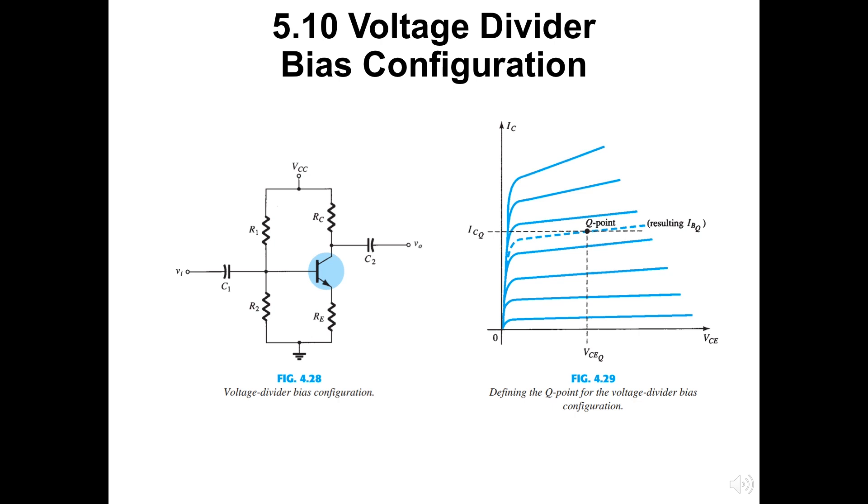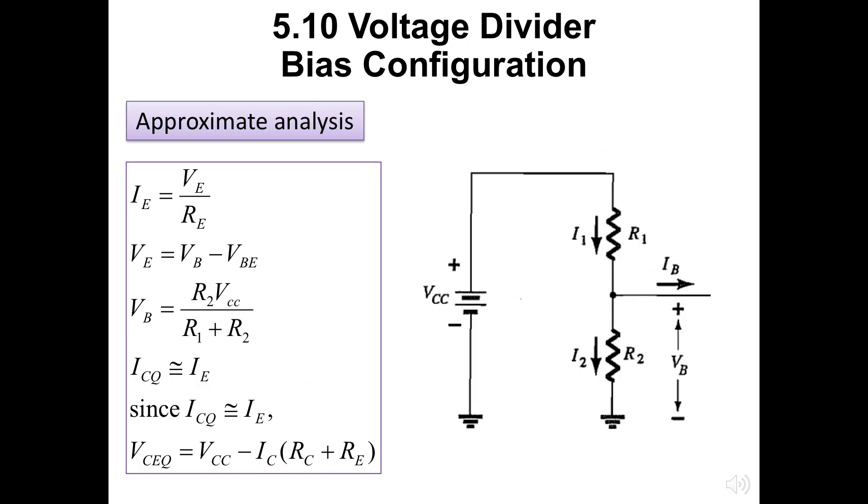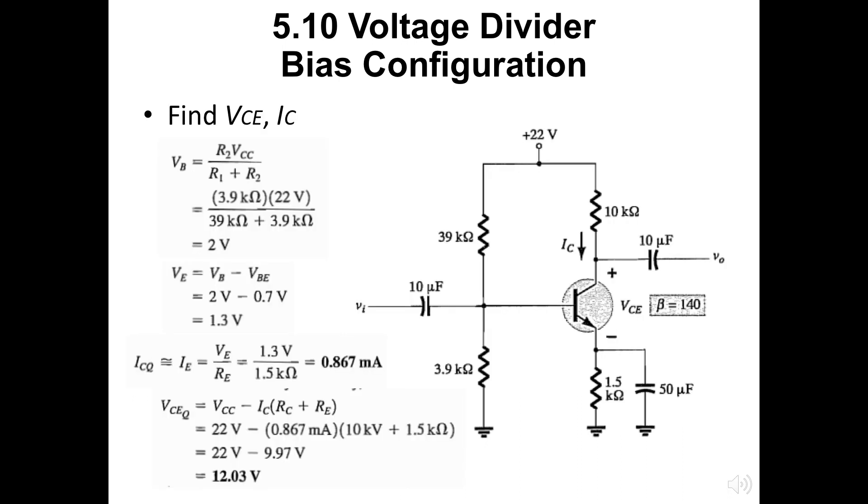Beside all application of the BJT that we discussed before, BJT also can be used as the voltage divider. Here is an example of the voltage divider bias configuration. Here is the approximation analysis for the voltage divider. IE is VE by RE. This value later will be used to find the VB and VCEQ. Using the VB from the previous slide and the VE, IE is calculated, and the result is 0.867 milliampere. Later this value will be inserted in the equation below to find the VCEQ as 12.03 volts.